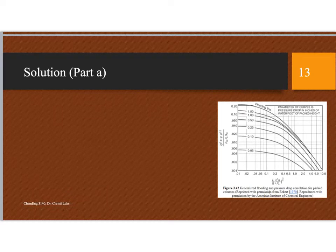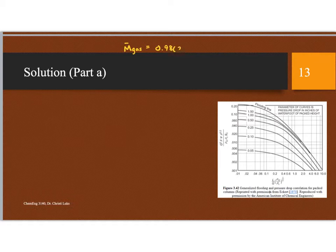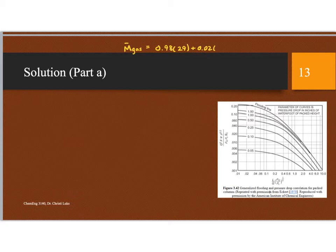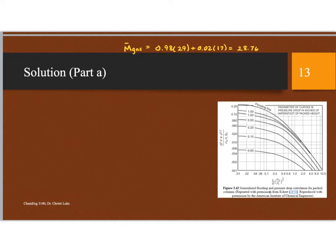So first we're going to need a molecular weight of the gas, and I'm going to just do it as a weighted average. So it's 98% air with a molecular weight of 29 plus 2% ammonia with a molecular weight of 17. And so we end up with 28.76 as our average molecular weight of the gas.